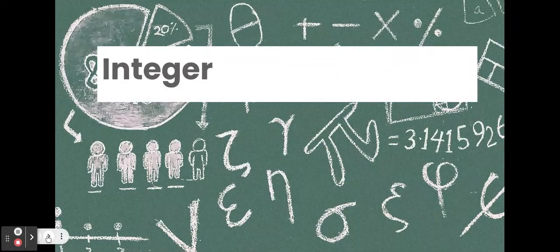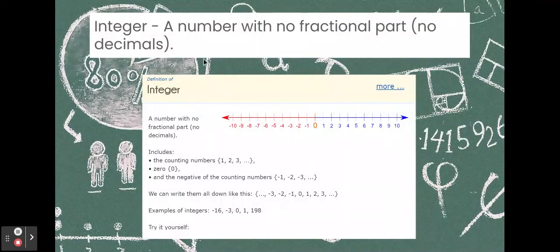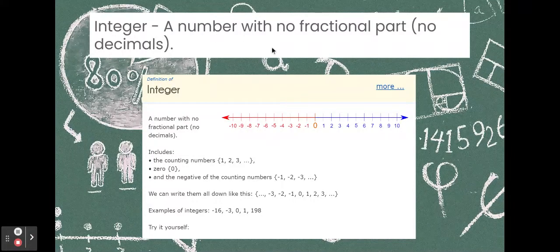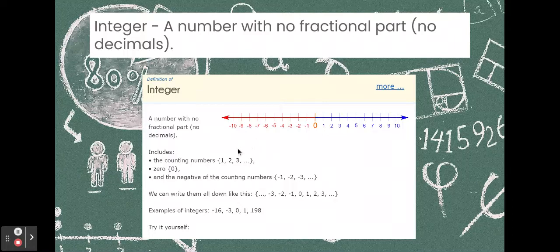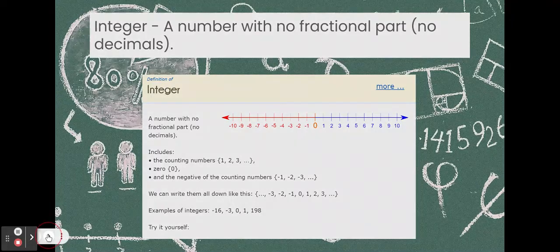What is an integer? An integer is a number with no fractional parts, no decimals, but it can be negative. So, it's all the numbers on the number line that are positive and negative. However, no fractions, no parts of a number, no decimals. All right, let's keep going.